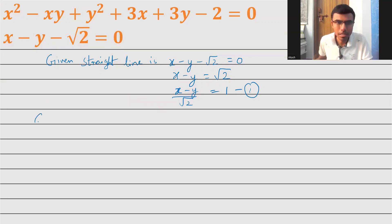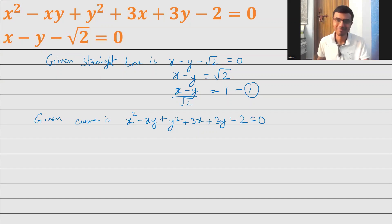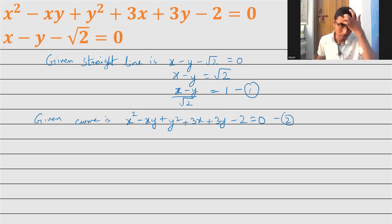Next, the given curve is x squared minus xy plus y squared plus 3x plus 3y minus 2 is equal to 0. This is my given equation, and I'm marking it as equation 2.